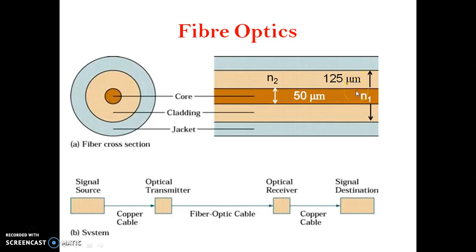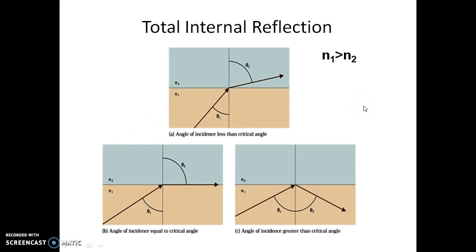Optical fibers are used for propagation of light using the principle of total internal reflection. When light is incident from a denser medium to a rarer medium with an angle of incidence greater than the critical angle, the light gets totally reflected in the same medium without any diffraction.